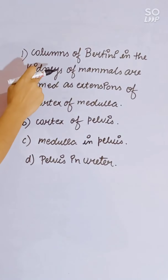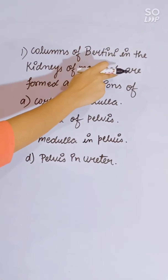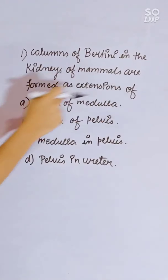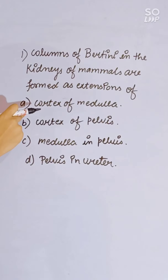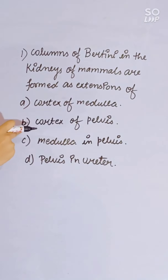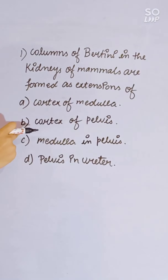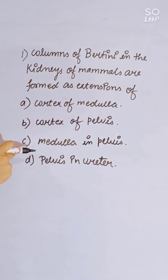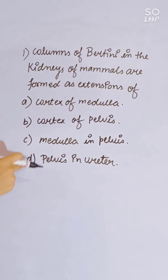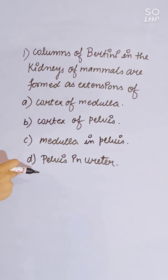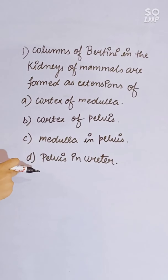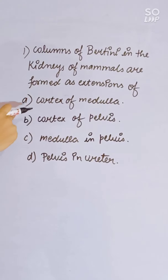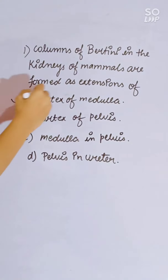Columns of Bertini in the kidney of mammals are formed at the junction of: cortex and medulla, cortex and pelvis, medulla and pelvis, or pelvis and ureter. Correct answer is cortex and medulla.